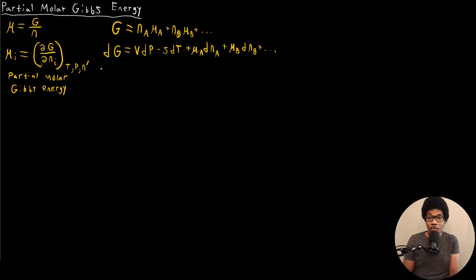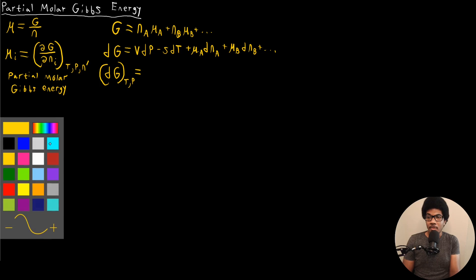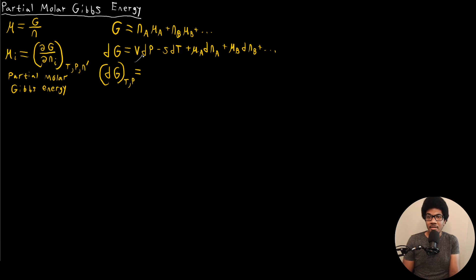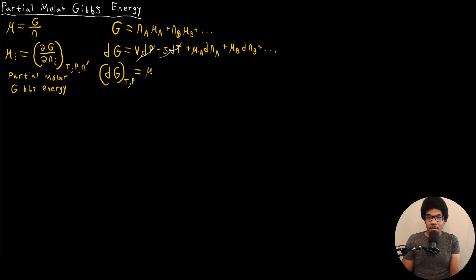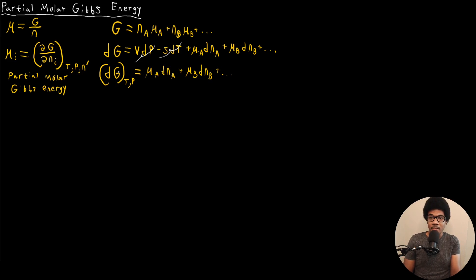Now if we hold the natural variables constant — so dG at constant temperature and pressure — then the VdP term goes away at constant pressure, and the SdT term goes away at constant temperature. So we're just left with mu_A dN_A plus mu_B dN_B plus dot dot dot, for however many components we have.